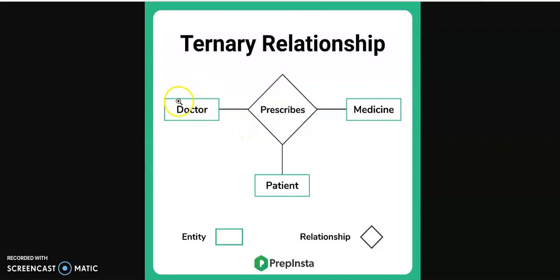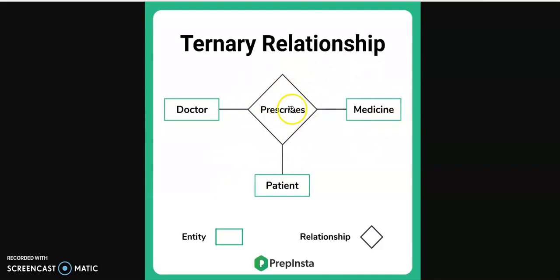We have three entities here: doctor, medicine, and patient. Think of it as a prescription scenario — doctors can prescribe medicines, and medicines can be prescribed to patients. If you want to record the relationship that exists between all three entities at once, you use a ternary relationship. The diamond you see here represents that relationship, but it is not an entity that can store data between those three entities.